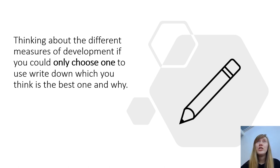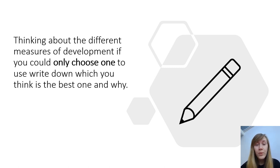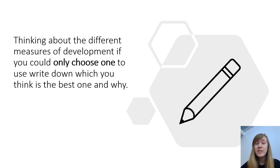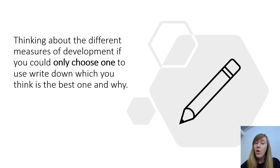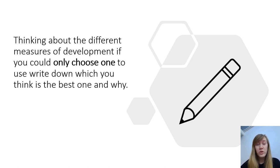A little reminder of the measures of development we looked at: we looked at GNI which was gross national income, HDI which was the human development index, life expectancy, and some of us looked at donkeys or another kind of measure. Send me your answers — which one you picked and why.